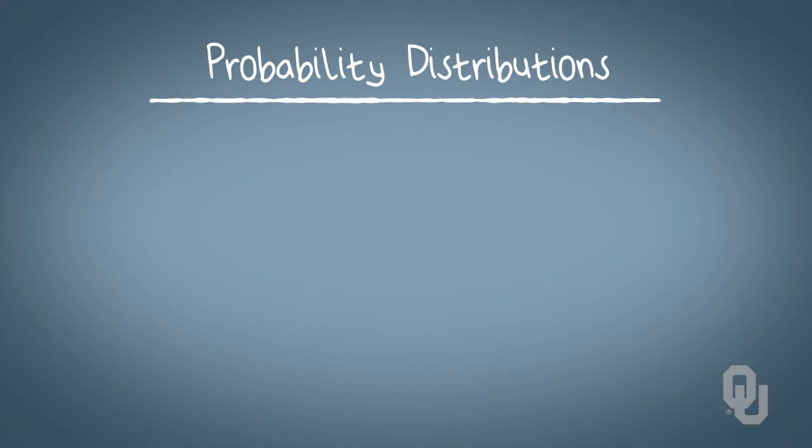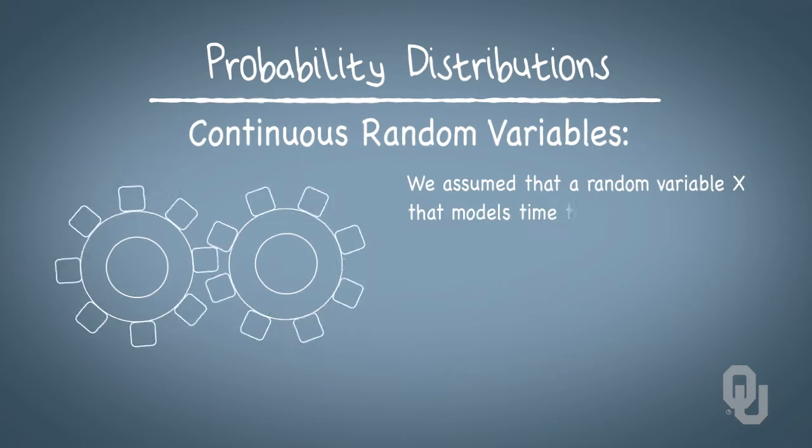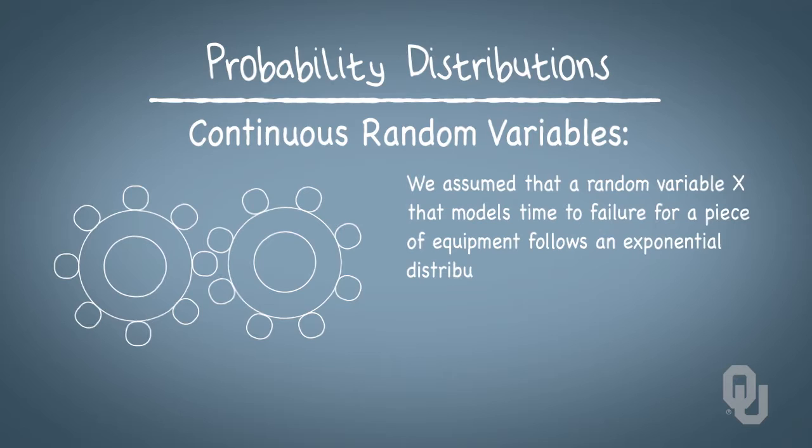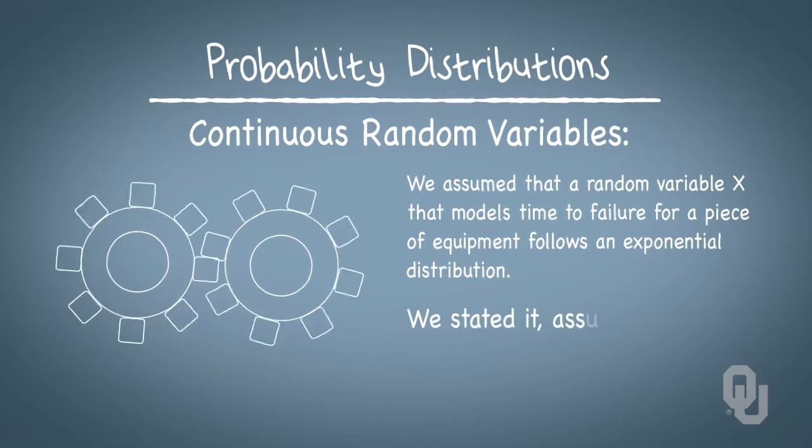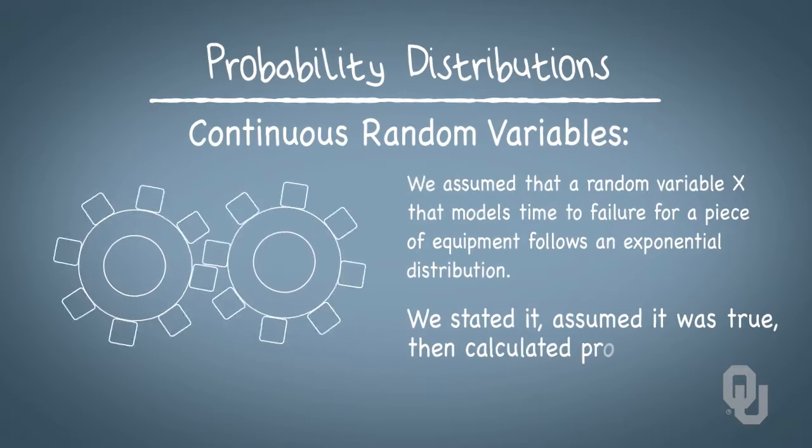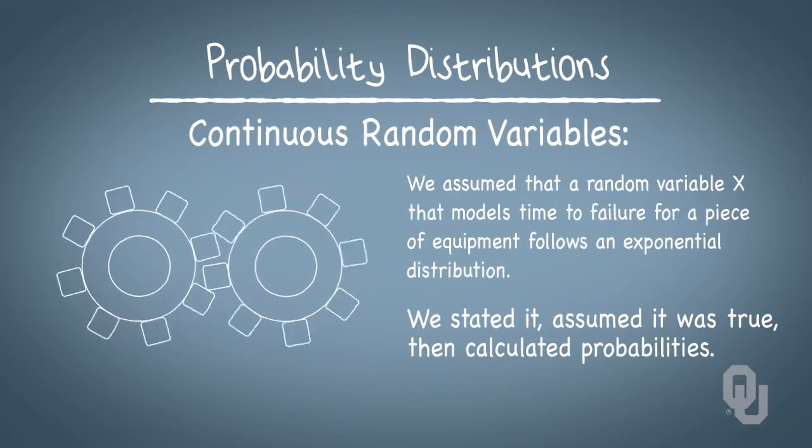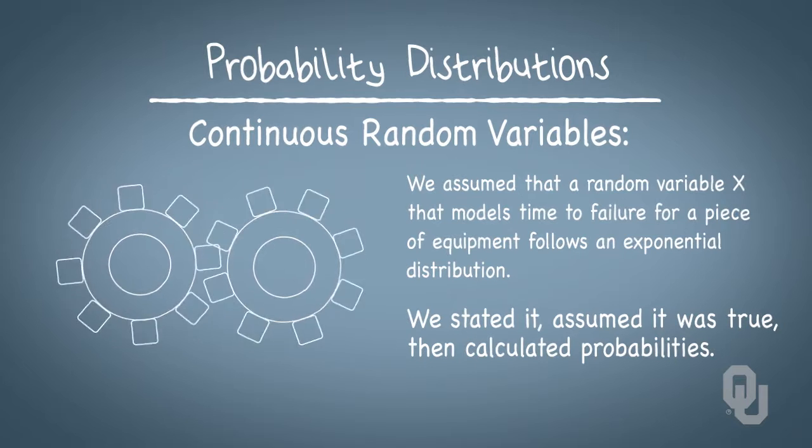And we've always made assumptions about these probability distributions. For example, in our conversations about continuous random variables, we assumed that a random variable x that models time to failure for a piece of equipment follows an exponential distribution. We just stated it, assumed that it was true, then calculated probabilities of particular failure time intervals given the assumption of an exponential distribution.